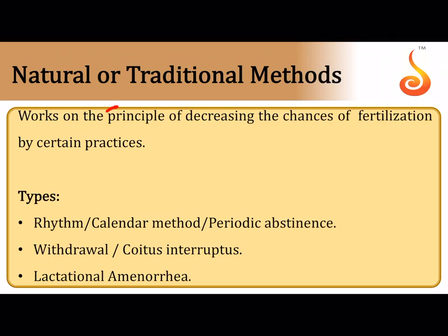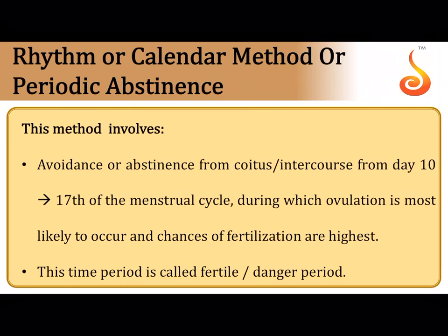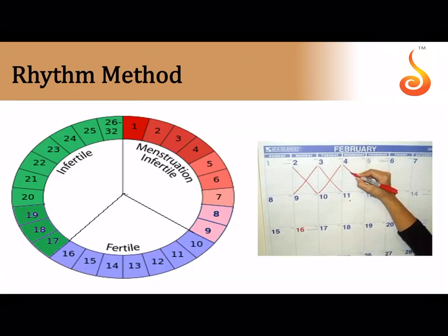Natural methods work on the principle of decreasing the chances of sperm and egg meeting. Three natural methods are: rhythm (calendar) method, withdrawal (coitus interruptus), and lactational amenorrhea. In the rhythm method, the couple abstains from sexual intercourse between days 10 to 17 of the menstrual cycle, since ovulation occurs around day 14 — making days 10 to 17 the fertile period. The female must track her menstrual cycle and calculate the likely ovulation day.